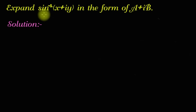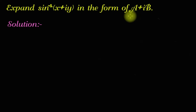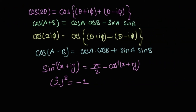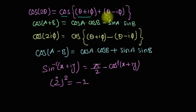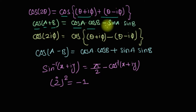Study Point के इस वीडियो में हम यह जानेंगे कि sin⁻¹(x+iy) को हम कैसे a+ib के form में explain कर सकते हैं। शुरू करने से पहले मैं आपको कुछ formula बताने वाला हूँ जो इस question में use होंगे। अगर cos(2θ) हो तो इसके बदले में हम लिख सकते हैं cos(θ+iφ + θ-iφ), और cos(a+b) = cos(a)·cos(b) − sin(a)·sin(b)।